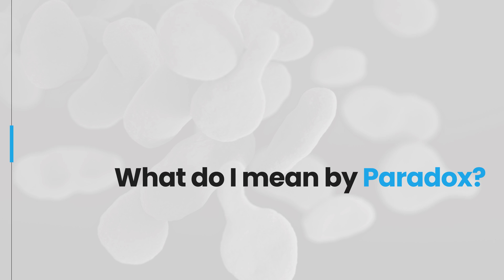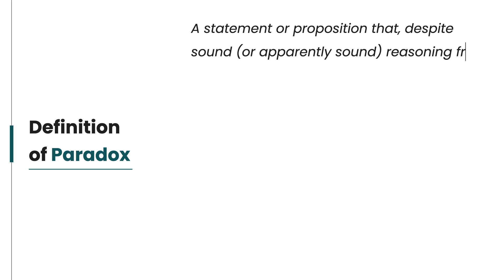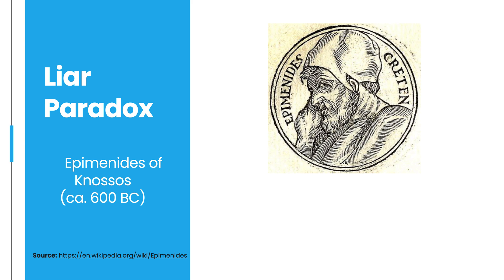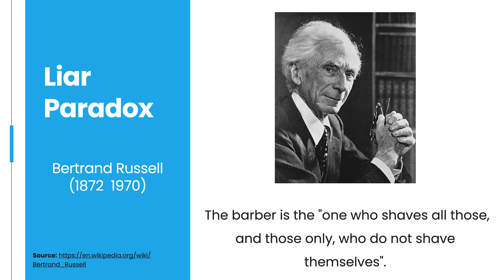So let's jump into the second idea — what do I actually mean by paradox? The New Oxford American Dictionary gives the following definition: a statement or proposition that, despite sound or apparently sound reasoning from acceptable premises, leads to a conclusion that seems senseless, logically unacceptable or self-contradictory. A famous example is the liar paradox, which comes across the centuries in different forms. The first, stated by the Cretan Epimenides of Gnosis, comes from stating 'all Cretans are liars.' The second, formulated by Bertrand Russell, is the Barber's paradox: the barber is the one who shaves all those and those only who do not shave themselves. The question is: does the barber shave himself?